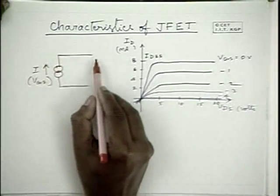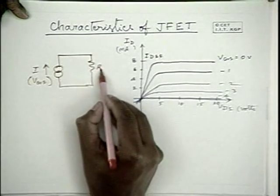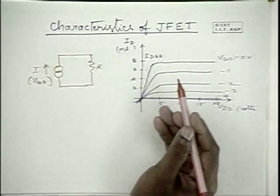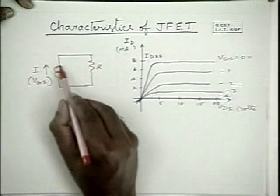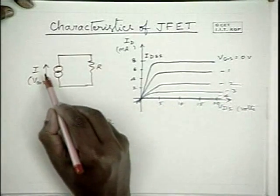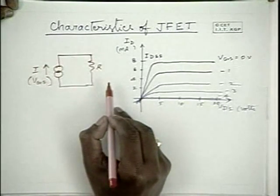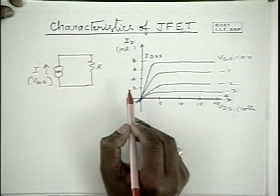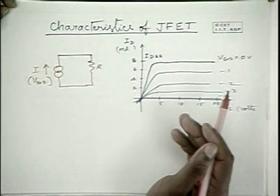So, if you pass this current through a large resistance, you will have a large voltage drop across it, and with a small gate to source potential, you will find a good appreciable amount of current variation. And when you pass this current variation through a large load resistance, you will have a large voltage drop across this resistance, and that is responsible for amplification. Hence, a JFET can be used as an amplifier.